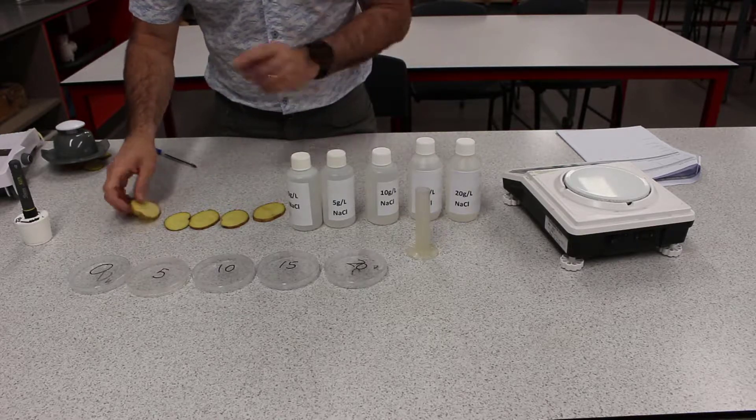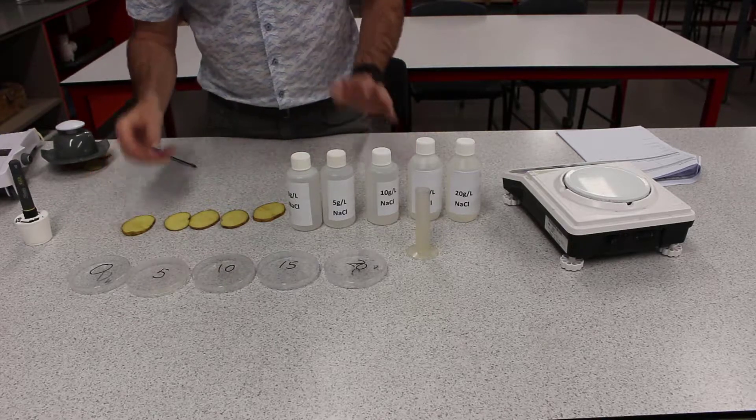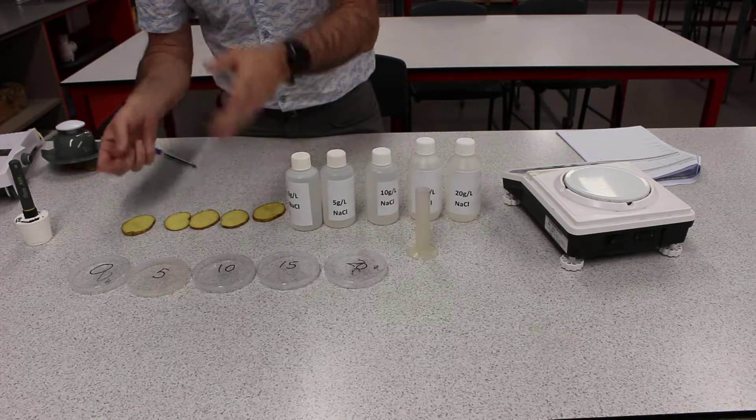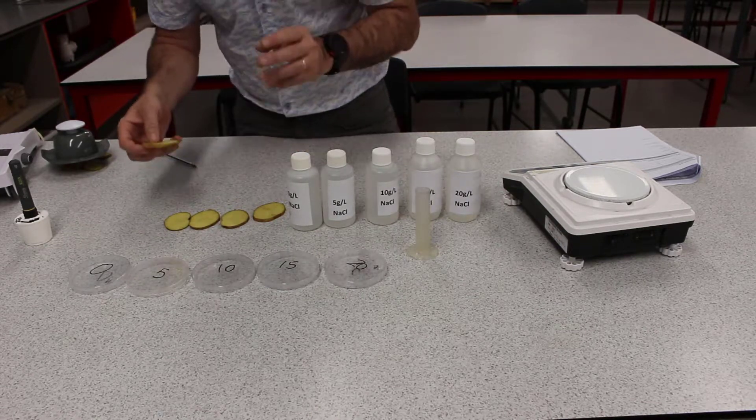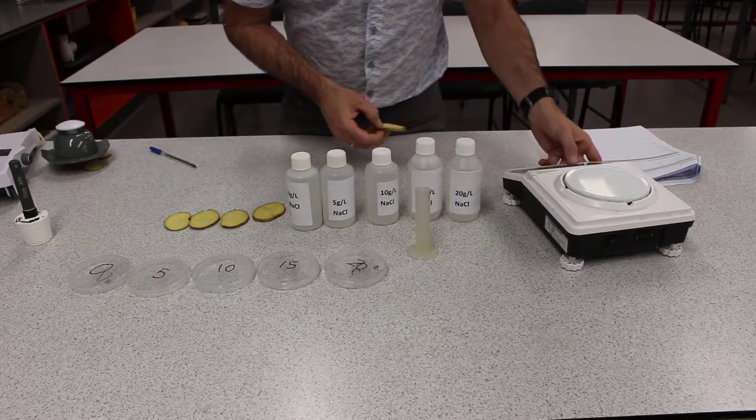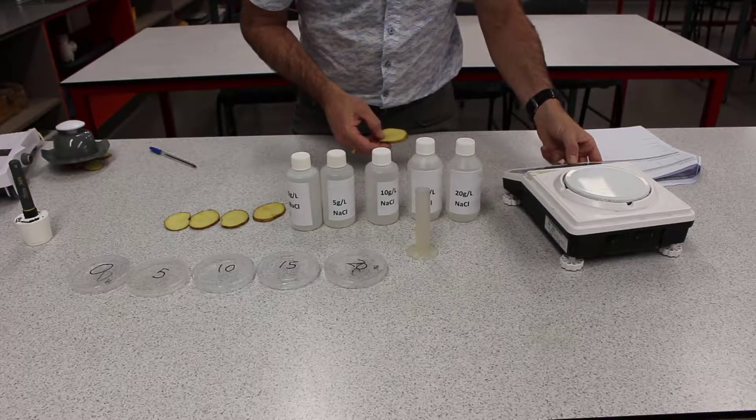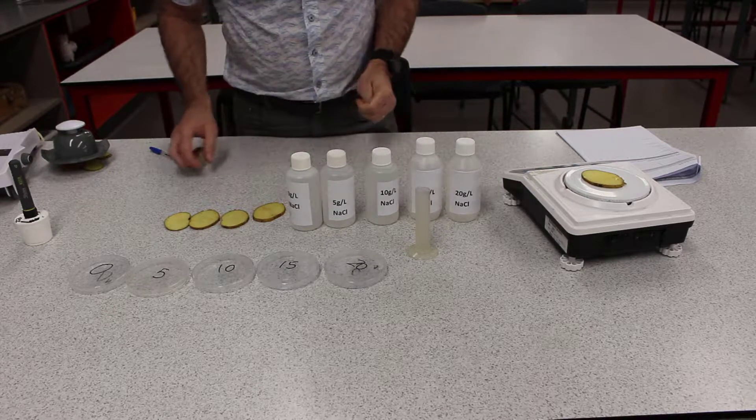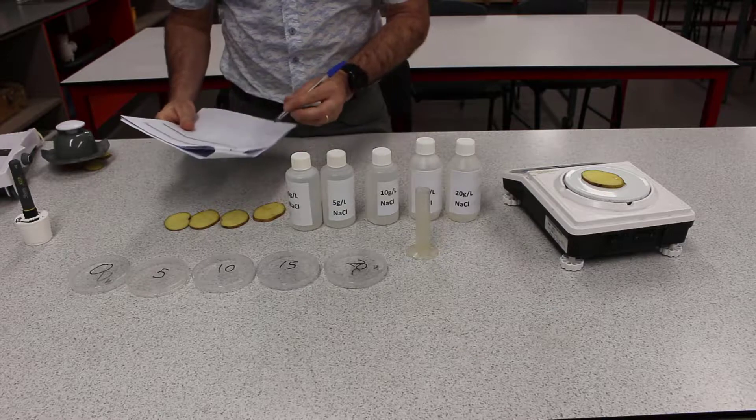Alright, now what we need to do first of all is we need to get our starting mass for each of our pieces. Just really important that you don't mix them up and put them in the wrong containers, so just be really super organized with that. So let's say this is going to be our 0%, make sure your scales are on grams and it's on zero. Place your potato on and then I want you to write down to as many decimal places as you can.